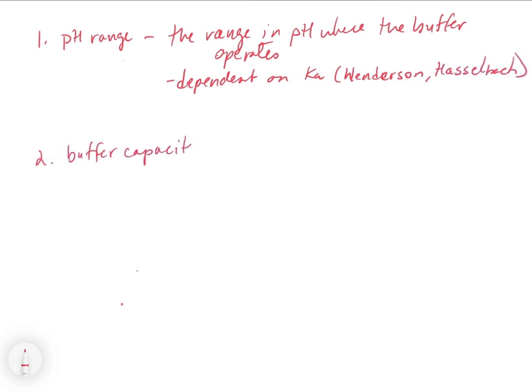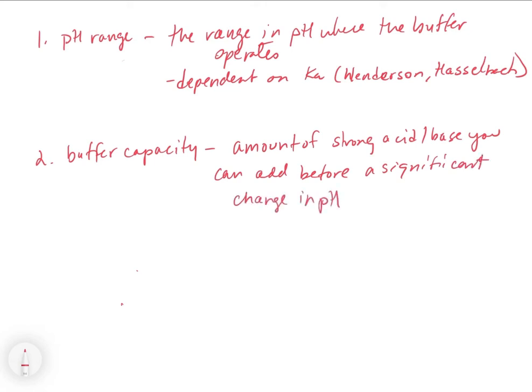The other property we're interested in is buffer capacity. Buffer capacity is basically the amount of strong acid or base you can add before you get an appreciable change in the pH. That's what buffer capacity is. Basically, how much can this buffer act to balance out any additions of strong acid or strong base.